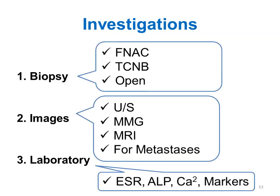Investigations are done either to prove that this is breast cancer, or to stage the patient. These include biopsy, imaging, and laboratory investigations. Biopsy may be FNA, core needle biopsy, or large needle biopsy. Imaging includes ultrasound, mammography, and MRI, plus imaging for metastases such as chest X-ray and CT. Laboratory tests include ESR, alkaline phosphatase, calcium, and tumor markers.